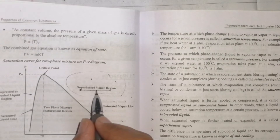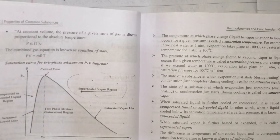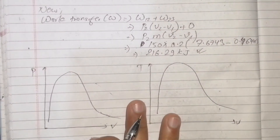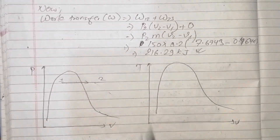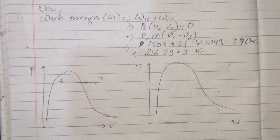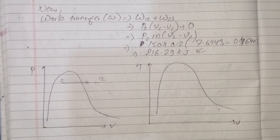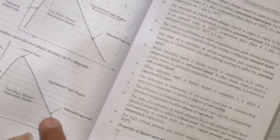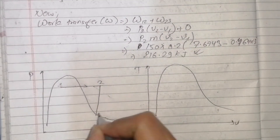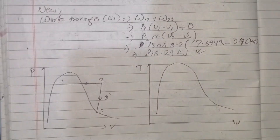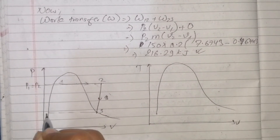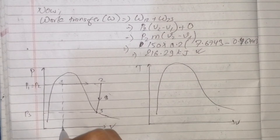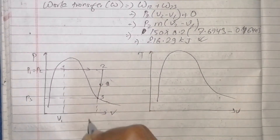On the diagram: process 1-2 is constant pressure superheated vapor. Process 2-3 ends at saturated vapor. P1 = P2, then P3 is at a lower pressure. States are marked as B1, B2, B3 on the PV diagram.